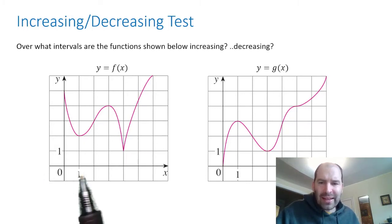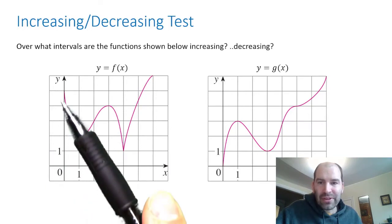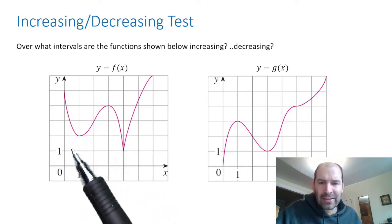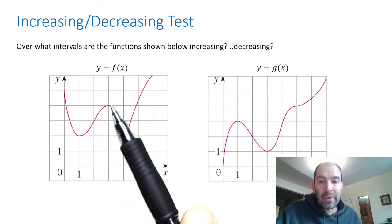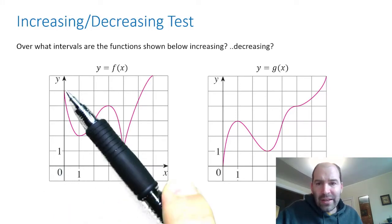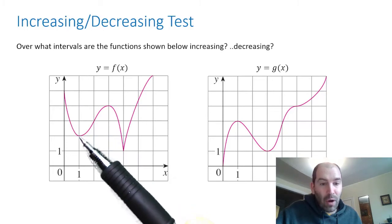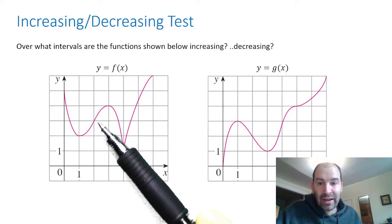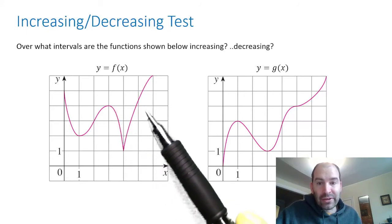Let's think about what that means. Suppose that the x-axis represented time, and maybe the y-axis represents the height of something — so we have this bird flying. As time goes by, the height of the bird is changing. The height may be going up as time increases or it might be going down. From that perspective, the height is decreasing as time goes from zero to one, and increasing as time goes from one to three.